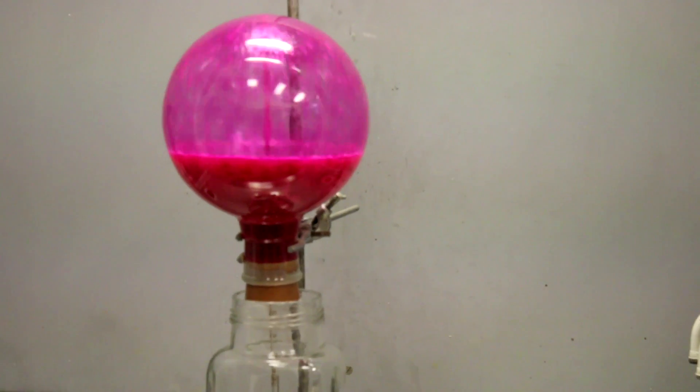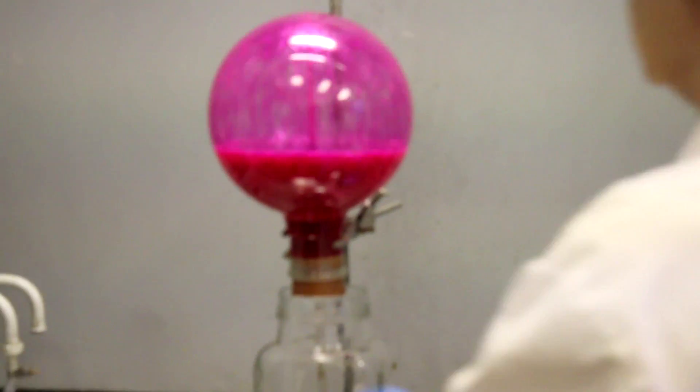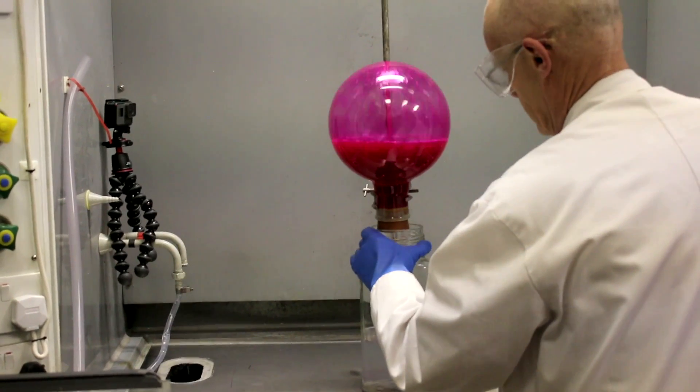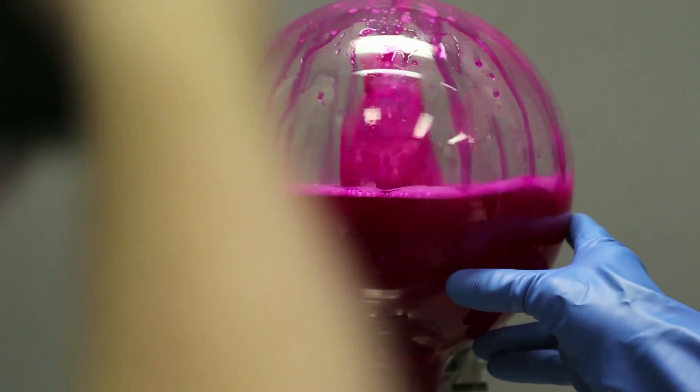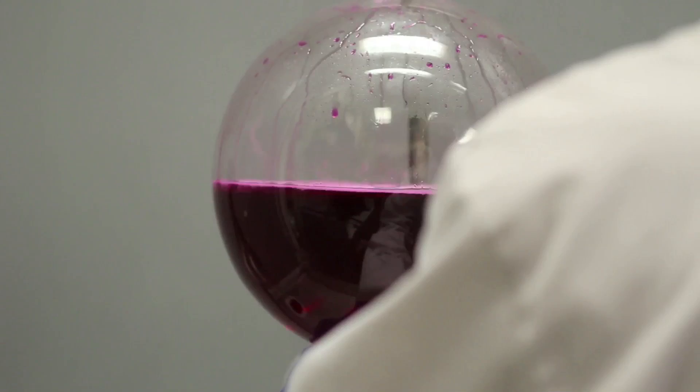Before we go on to the next one, just let me remind you: the reaction here is ammonia dissolving in water, making it slightly alkaline. The red color is not part of the reaction, but it's an indicator to show you that the water is alkaline.